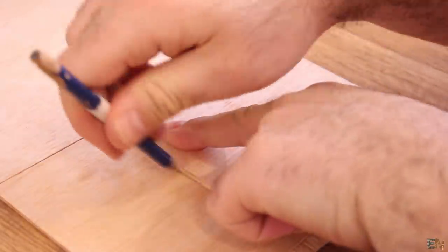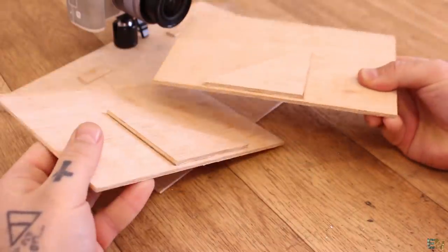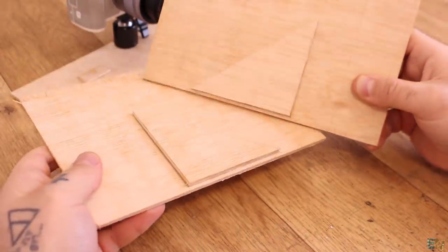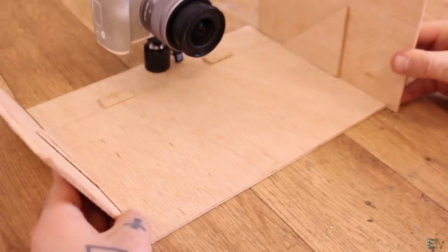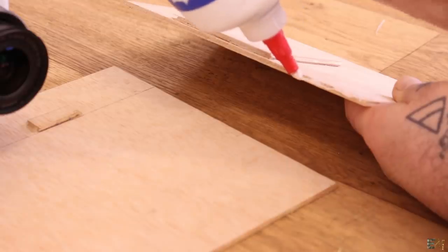Now I measure where to place the 45 degree triangles on the rectangle sides. I mark that on the plywood and then I glue in place the triangles on the sides. Now when I add these sides, they will support the glass at 45 degrees.